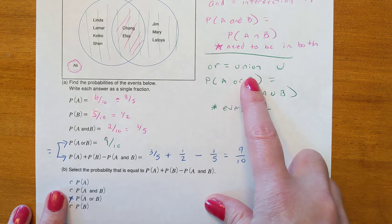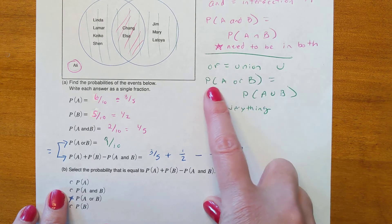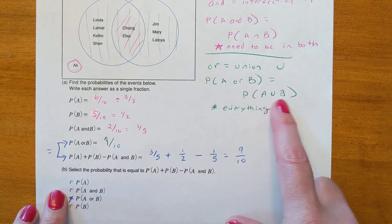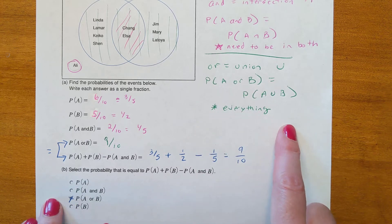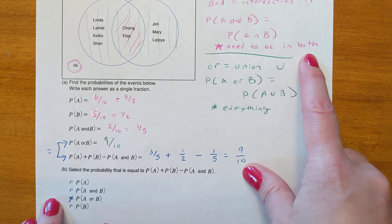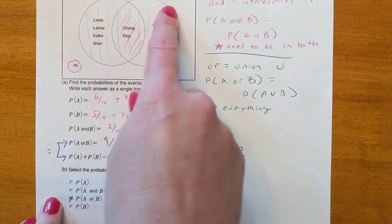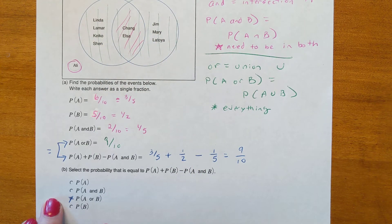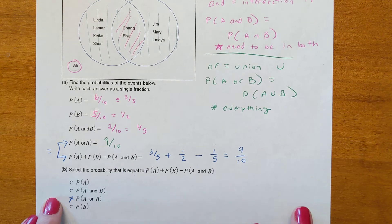The next part asks for A or B — 'or' means union, represented by a U. So the probability of A union B includes everything in both circles. For intersection, they need to be in both; for union, it's everything across both circles. I sketched green over both circles.